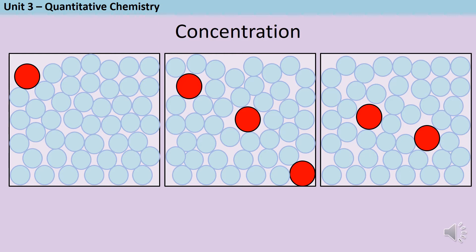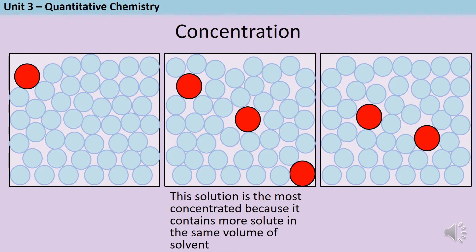Consider these three solutions. Which one of these is the most concentrated? Can you explain why using the words solute and solvent? The middle solution is the most concentrated. This is because it contains more solute than the other two solutions, and they all are in the same fixed volume.